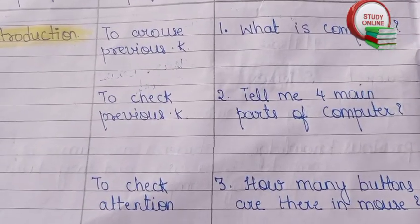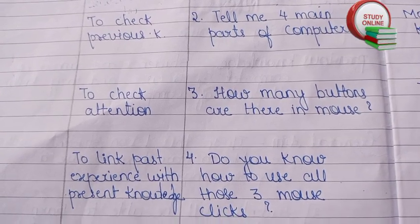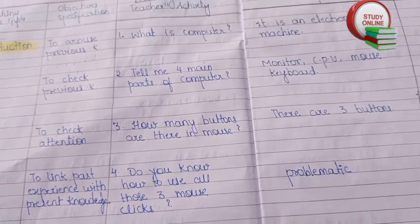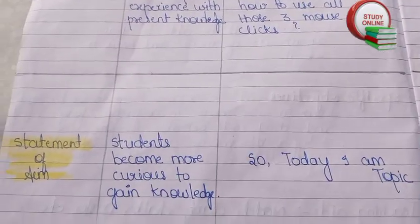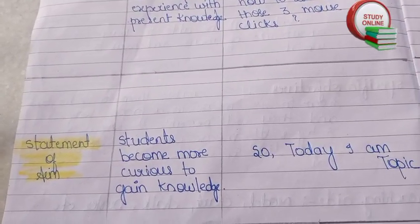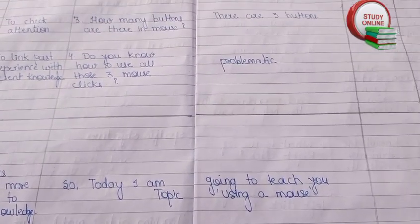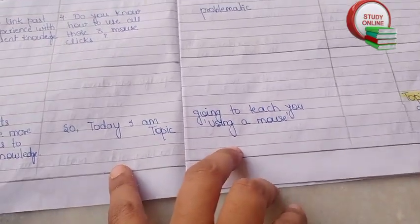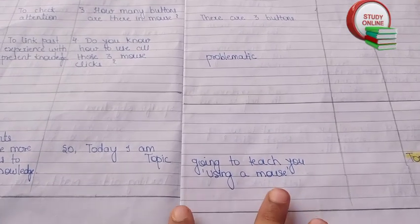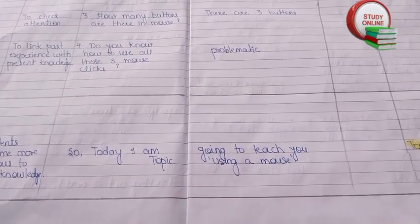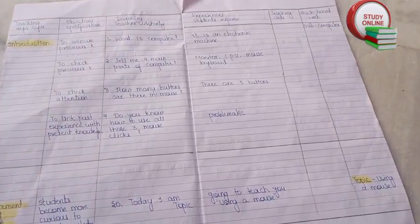Here you can see the objectives and specifications: to arouse previous knowledge, to check previous knowledge, to check attention, and to link past experience with present knowledge. After that, we have to announce our topic — 'today I am going to teach you about using a mouse' — and we also have to write the topic on the blackboard.